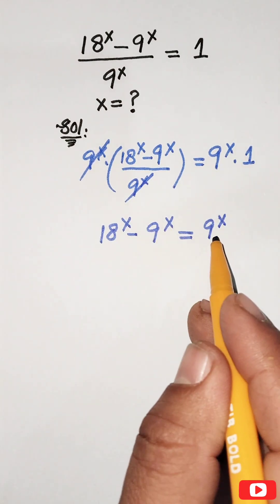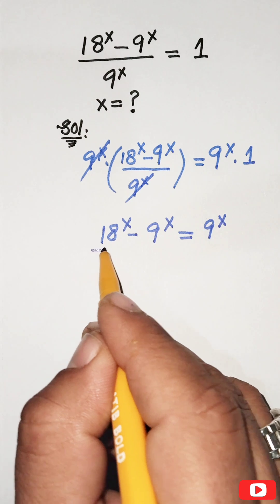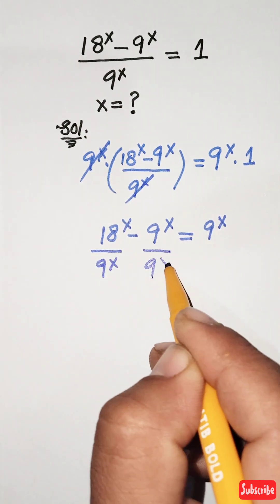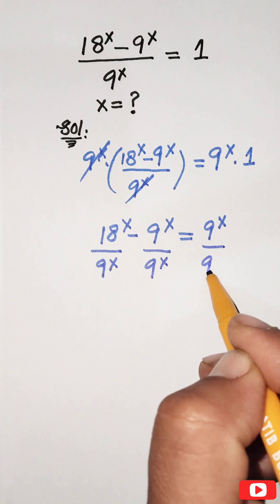Now we divide each term by 9^x. We get 9^x here, also 9^x, and similarly on the right-hand side, 9^x.